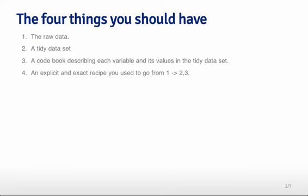The four things that you should have when you finish going from a raw data set to a tidy data set are the following. You should have the raw data - that's the files that you're actually extracting information from. You should have a tidy data set, and then you should have a code book describing each variable and its values in the tidy data set. This code book is often called the metadata, so it's the data that surrounds the data and explains what the data is trying to say.